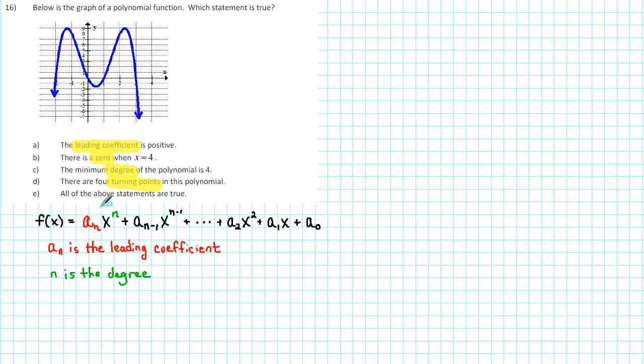When we arrange the powers from highest to lowest, the first term is called the leading term. Its coefficient, a sub n, is called the leading coefficient. And its exponent, n, is called the degree.